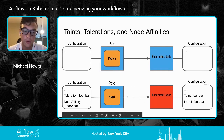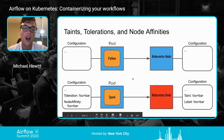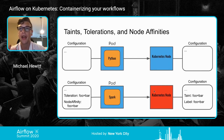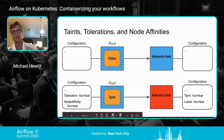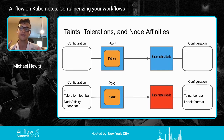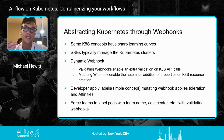You might be wondering why we don't just use node affinities alone. The reason we need taints is that the taint actually prevents weaker applications from being scheduled on the stronger node. If we didn't have the taint, the Python pod could still be scheduled on that stronger node and waste the stronger compute that Spark should be using. So taints and tolerations work together with node affinities to achieve proper dedicated node scheduling.